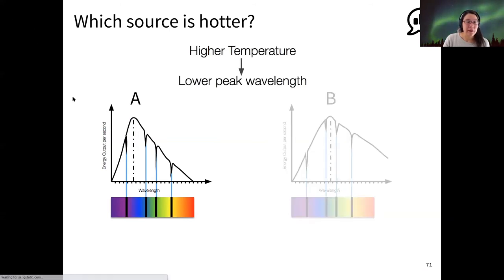So indeed, A is hotter. And so a higher temperature means a shorter peak wavelength. By lower, I mean shorter peak wavelength. I try not to say higher or lower with wavelength. I like longer and shorter because it's a distance measurement, but sometimes I mess up.